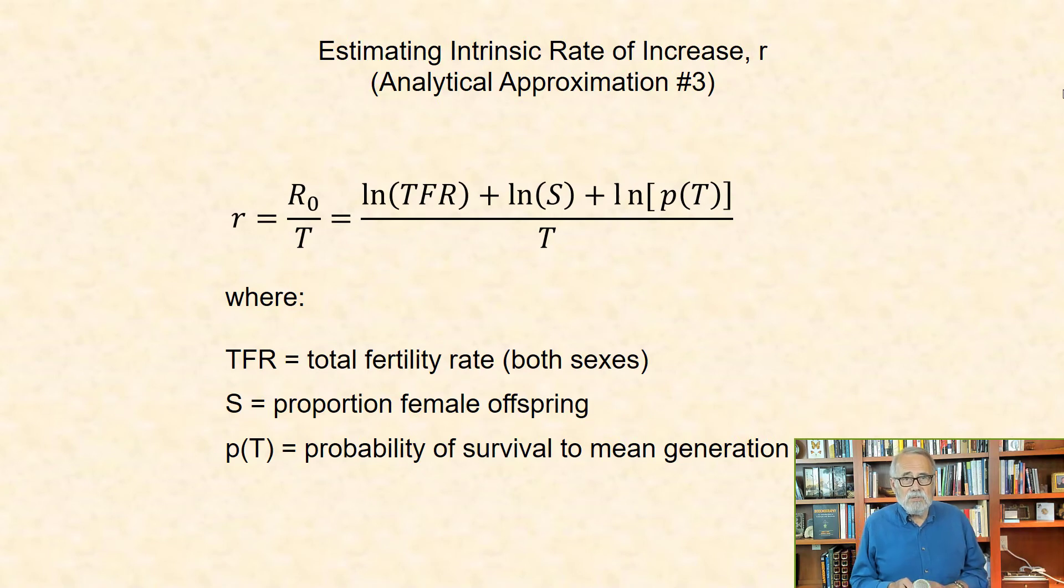The third analytical approximation formula is based on the formula with three expressions in the numerator, including the natural log of the total fertility rate, which includes both sexes, plus the natural log of the proportion of female offspring, which is typically 0.5, plus the natural log of the probability of survival to the mean generation time, T, all divided by T. Note in all three of these analytical approximation formulas that the mean generation time, T, has a direct and inversely proportional effect on r. Thus, increasing T decreases r, and decreasing T increases r.